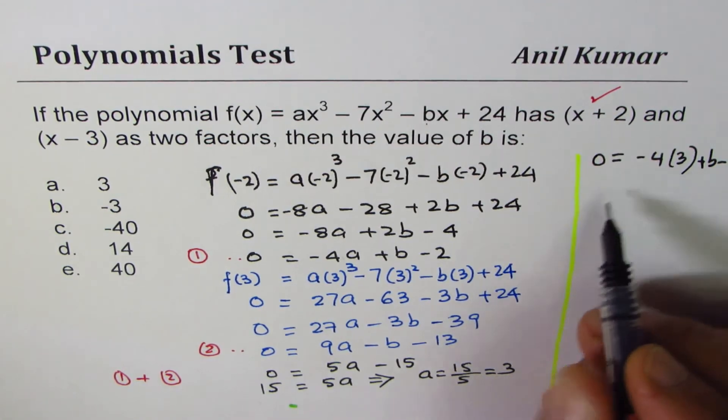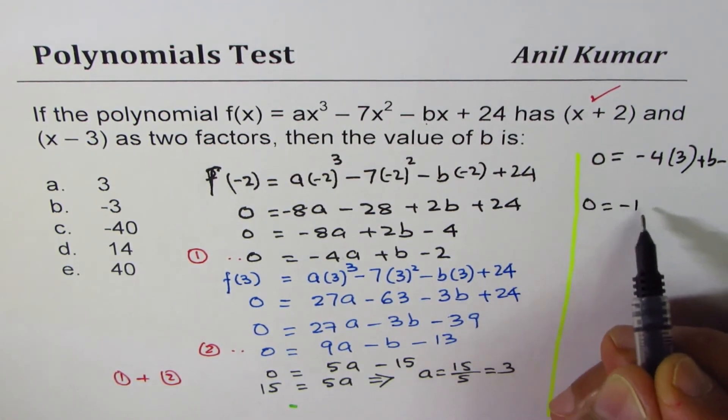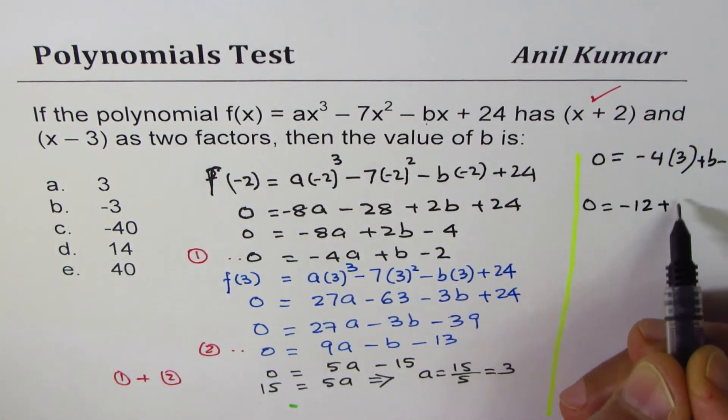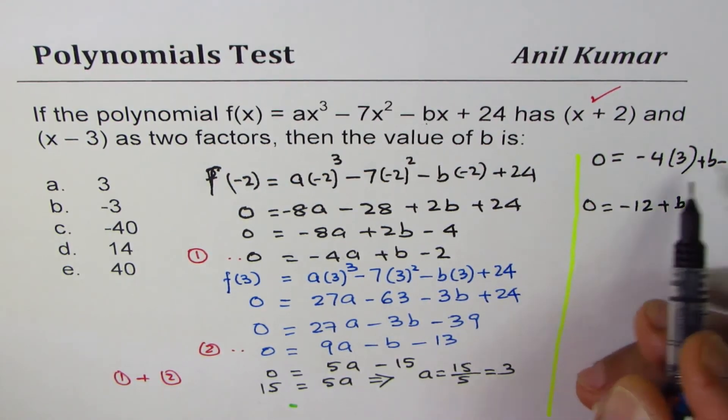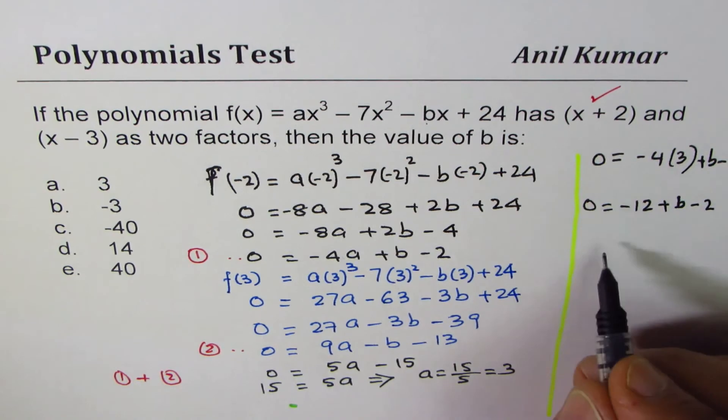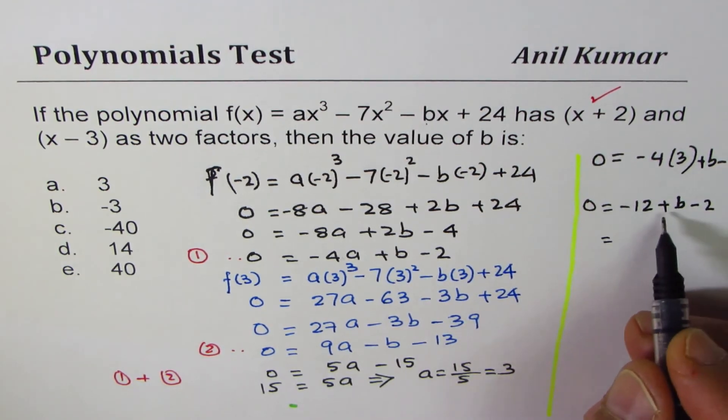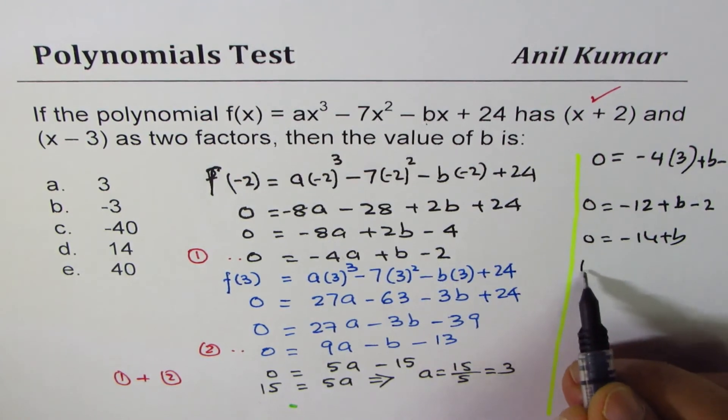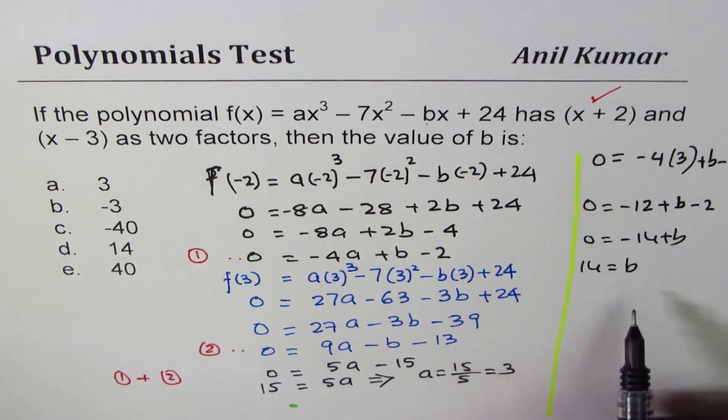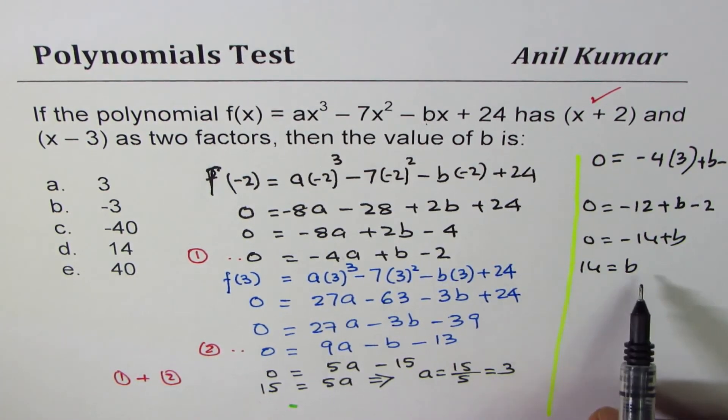plus b - 2. So, bringing these terms together, we get 0 = -12 + b - 2, which is -14, right? So, -14 + b = 0, or 14 = b.